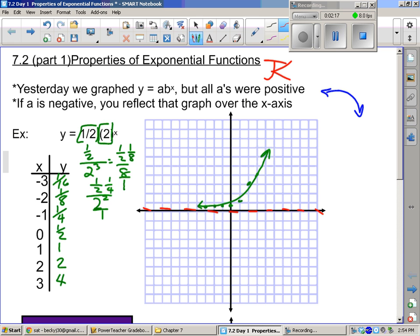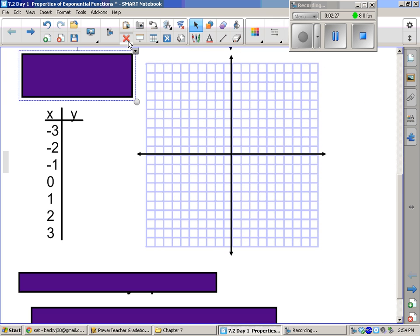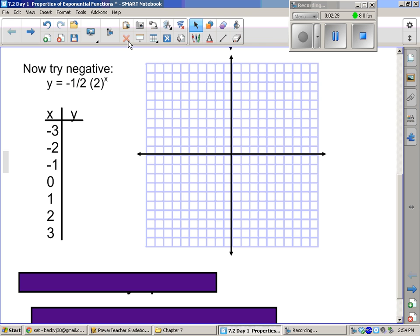And remember we talked about that horizontal asymptote. That funny word. It never quite reaches it. So that was a positive a. Let's try it with the negative. Now wait a second, aren't you going to get all the same numbers from the other T chart? Well, they're going to be negatives. So we can just replace it.